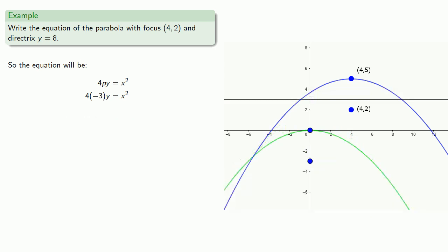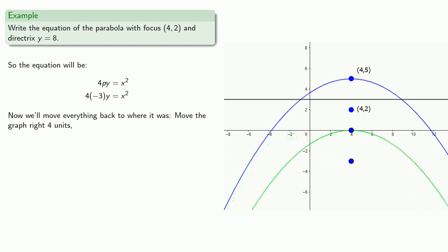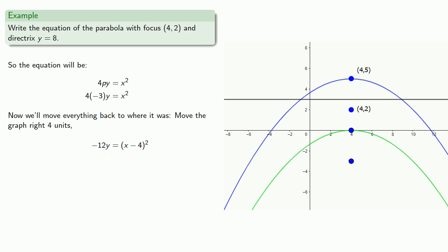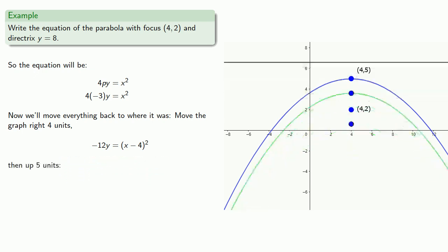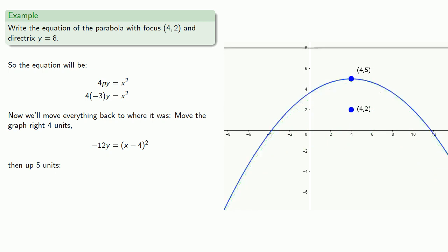Now let's put everything back to where it was. We move the graph right 4 units, updating our equation, then up 5 units, which gives us our final equation.